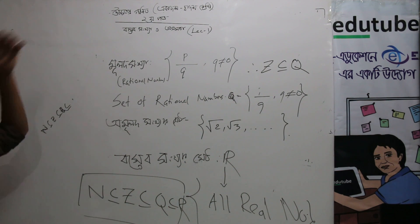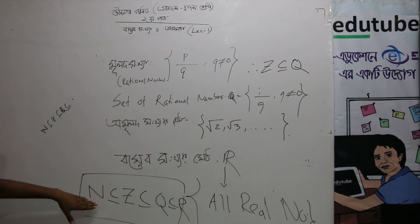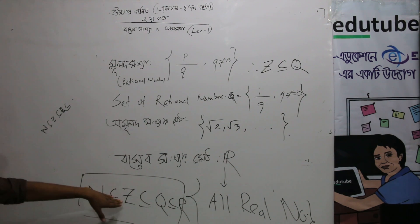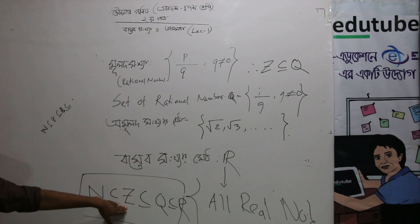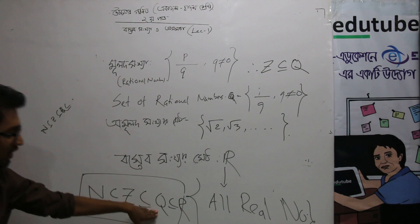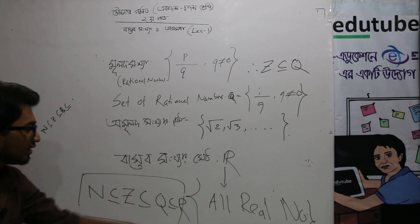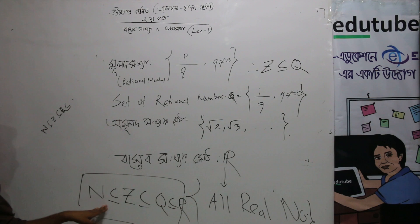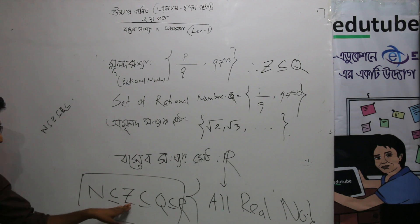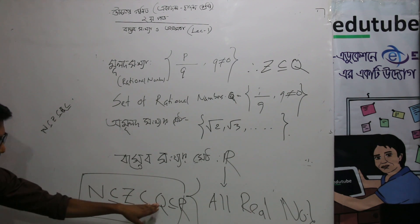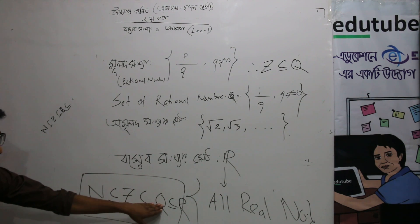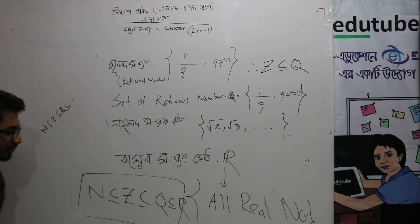Natural number set, whole number set, integer set, and real number set. Among these, N subset of Z, Z subset of Q, Q subset of R.